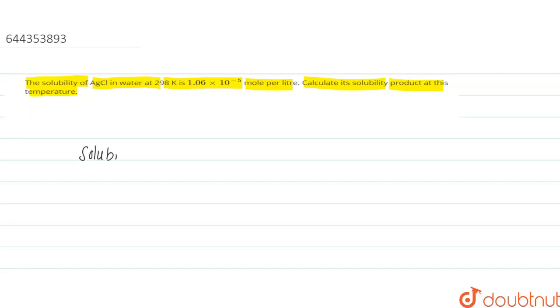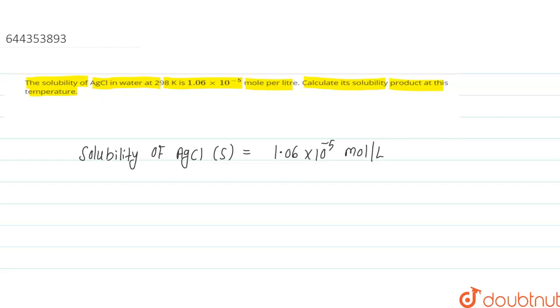So in this question, we are given the solubility of AgCl, which is 1.06 × 10⁻⁵ mole per liter. We have to calculate the solubility product, represented by Ksp of AgCl.